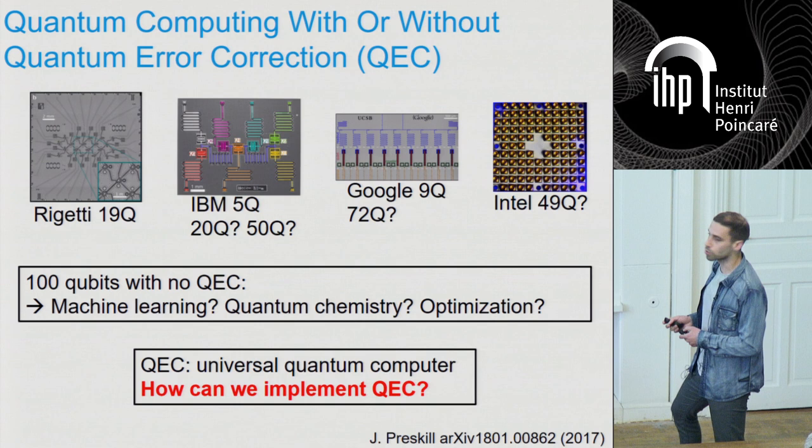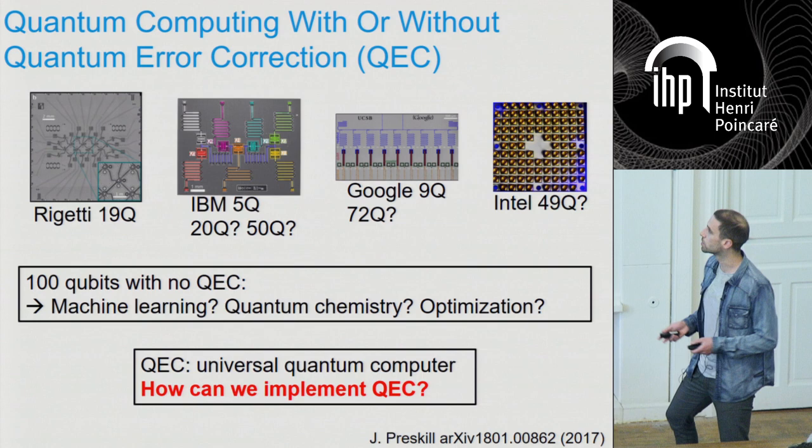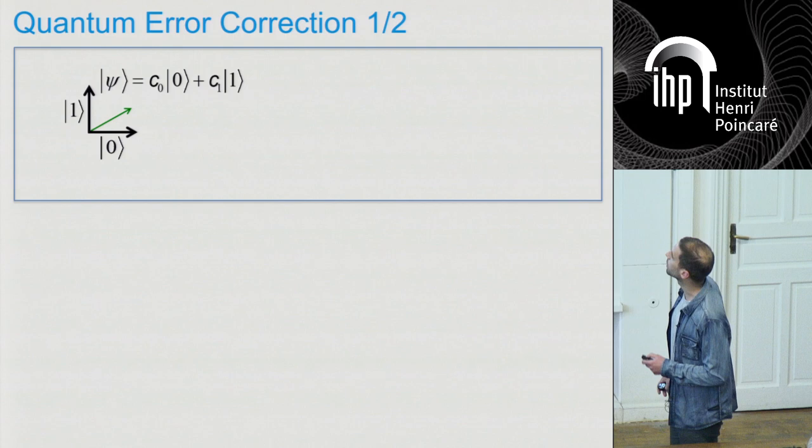First I'm going to talk about the sort of overhead you need when you do error correction, and the topic of this research is how we can implement it in the lab with fewer resources than what is currently proposed. Just a few words about quantum error correction so that we're all on the same page.